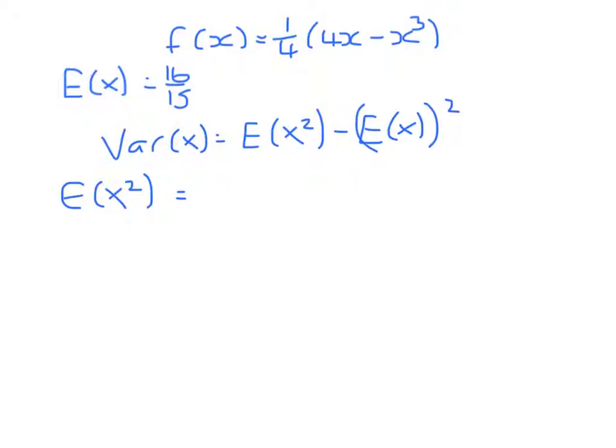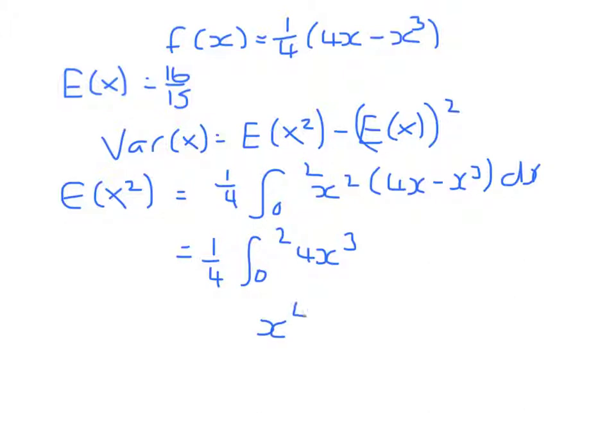The expectation of x squared will be 1 quarter times the integral from 0 to 2 of x squared times 4x minus x cubed. That means we are integrating 4x cubed, which will give us x to the 4 minus x to the 5, which integrates to give x to the 6 over 6.